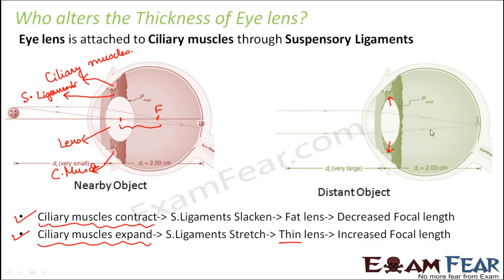The lens was set free, so it was a fat lens with a lesser focal length. Now the lens is stretched by the stretched suspensory ligaments, because of which it is a thin lens with an increased focal length. I hope this concept is clear — how ciliary muscles control the focal length of the eye lens — because controlling the focal length is very important. Otherwise we will not be able to make an image form on the retina, and if image formation doesn't happen on the retina, we will not be able to see anything.